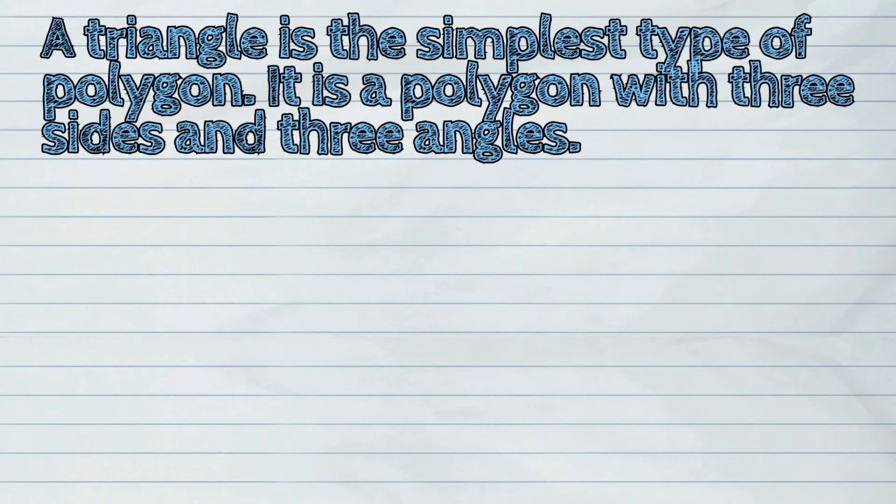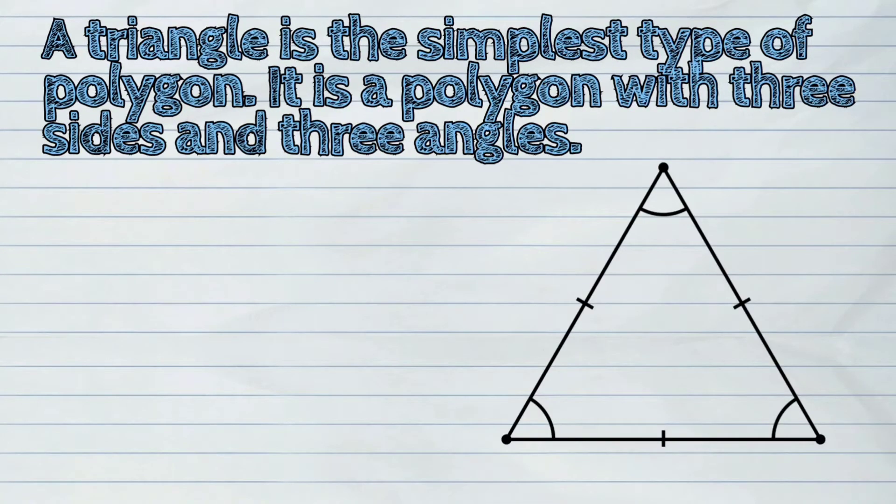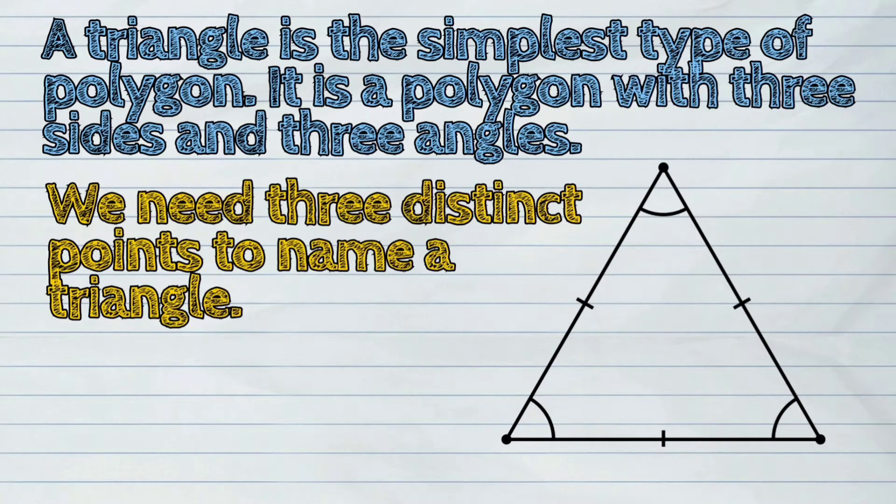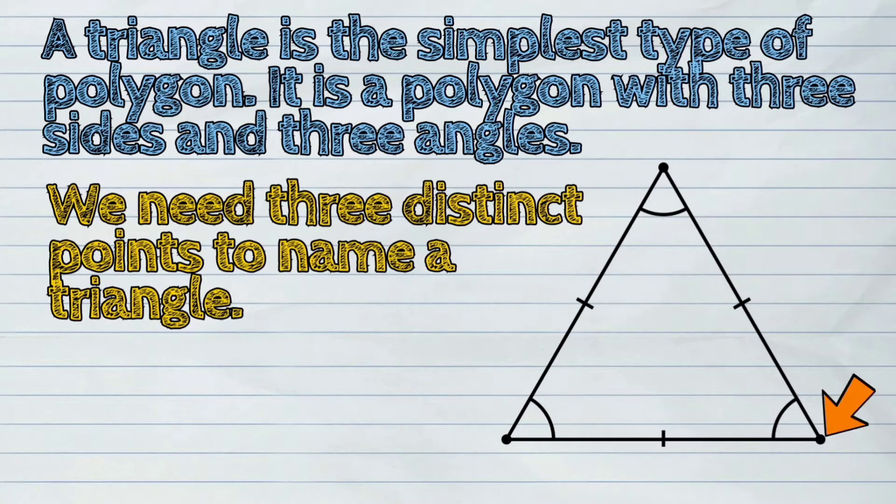A triangle is the simplest type of polygon. It is a polygon with three sides and three angles. We need three distinct points to name a triangle.